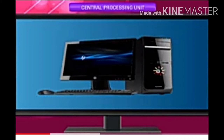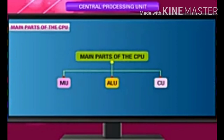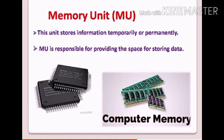It has three parts: MU — memory unit, ALU — arithmetic and logic unit, and CU — control unit. The memory unit stores information temporarily for making calculations. This temporary storage is made up of registers.